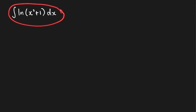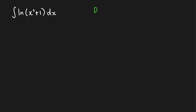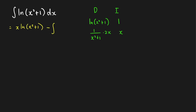Next problem: let's evaluate the integral of ln(x² + 1). If the integrand is just a logarithm, most of the time we integrate using integration by parts. Applying integration by parts by the tabular method — let u equal ln(x² + 1) and dv equal dx. Differentiating u gives 2x over (x² + 1), and integrating dv gives x. By integration by parts, this equals x·ln(x² + 1) minus the integral of 2x² over (x² + 1) dx.